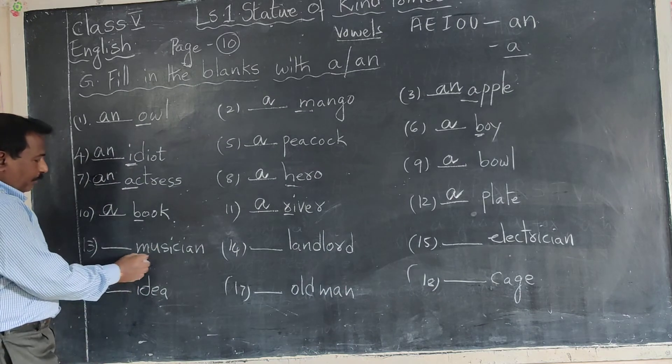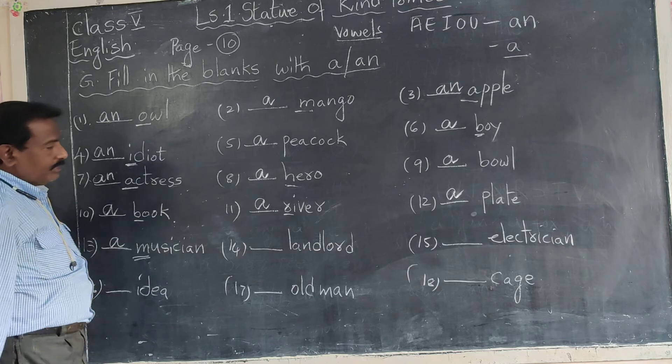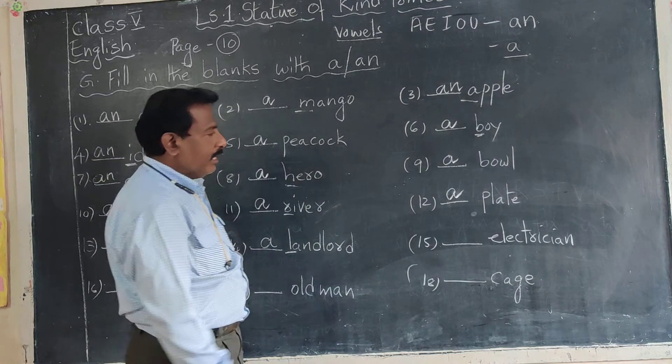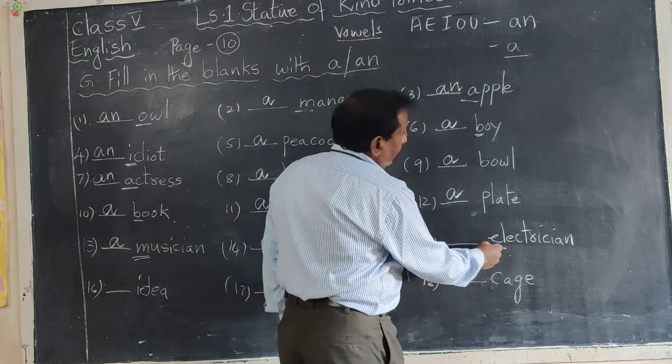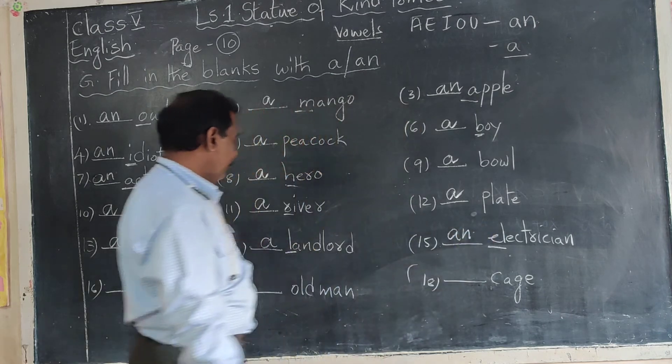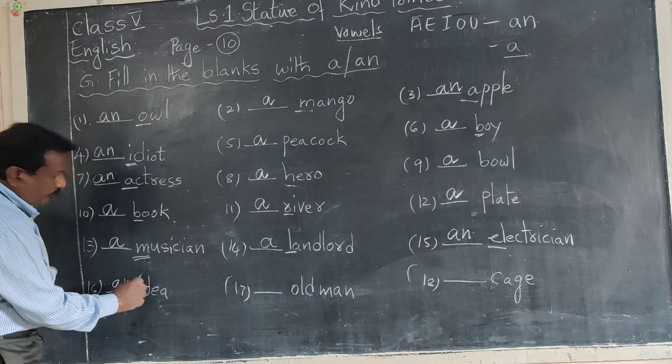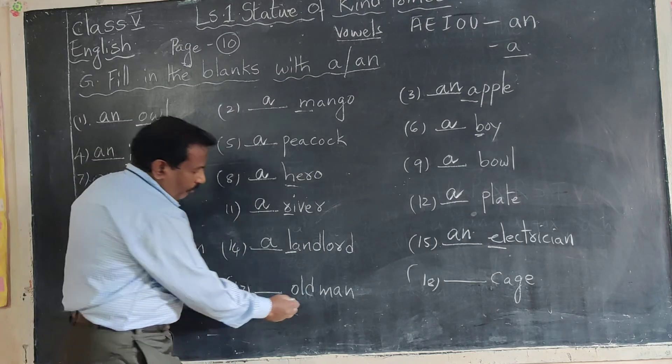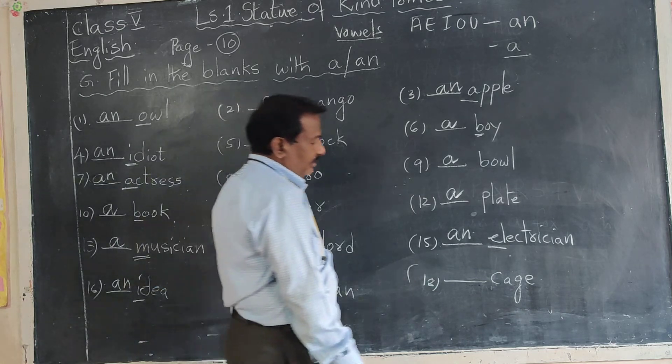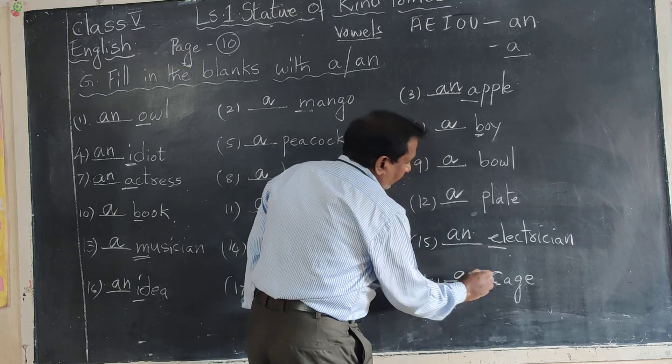Magician - M is consonant, we say a magician. Landlord - L also consonant, we say a landlord. Electrician - E is vowel, say an electrician. Idea - I is vowel, an idea. Old man - O is vowel, so an old man. Cage - C is consonant, we say a cage.